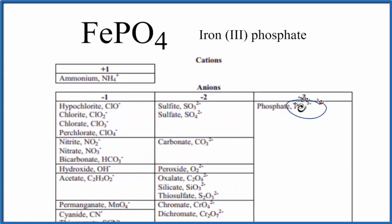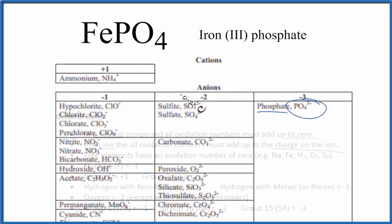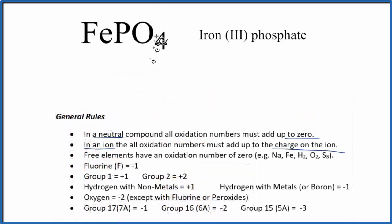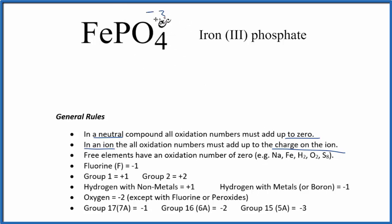Looking for PO₄ here — the phosphate ion — that's 3-. So 3- for this whole PO₄ ion. Since the oxidation numbers add up to the charge, this whole phosphate is going to be minus 3. That's its oxidation number.